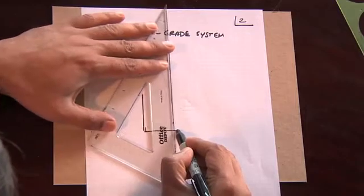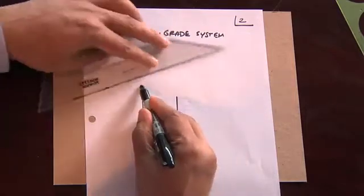Slab-on-grade system was done primarily for economics. That system looks like this. That consists of a perimeter footing with a slab.